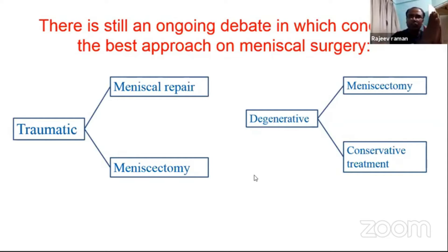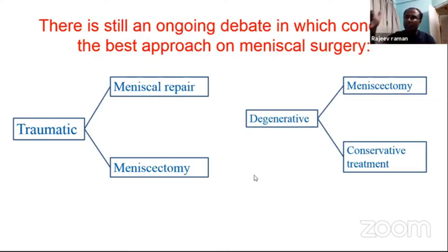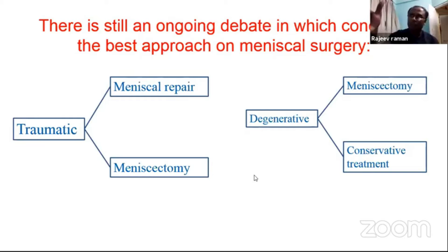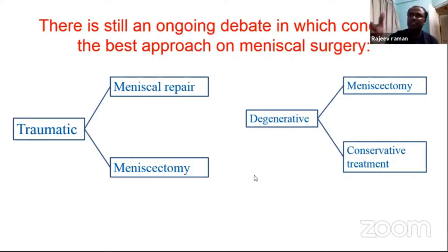So the take-home message: for all traumatic tears, meniscus repair should be the first option because it commonly involves the younger group. For all degenerative tears, meniscectomy should be your first option. Don't try to go for a repair, because people have burnt their fingers repairing degenerative tears in the older population.